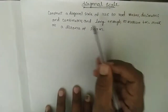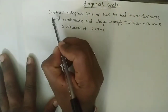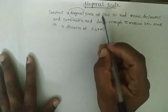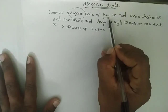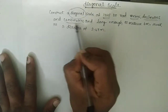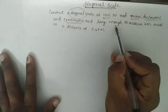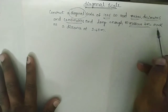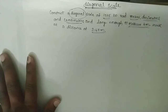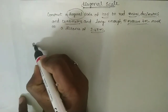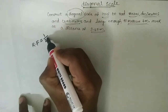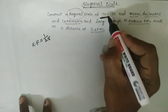This is the second type of scale — the diagonal scale. Construct a diagonal scale of 1 is to 25 to read meters, decimeters, and centimeters, long enough to measure 4 meters. This is the maximum length. Mark a distance of 2.47 meters. The given data is RF equal to 1 is to 25, that means 1 by 25.